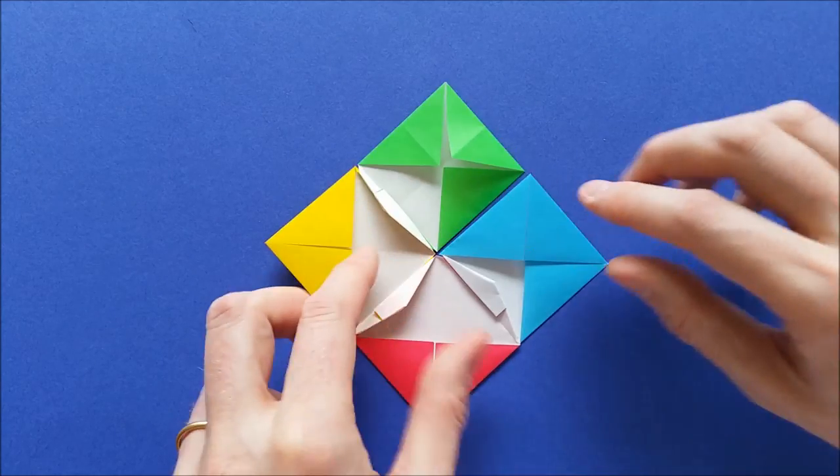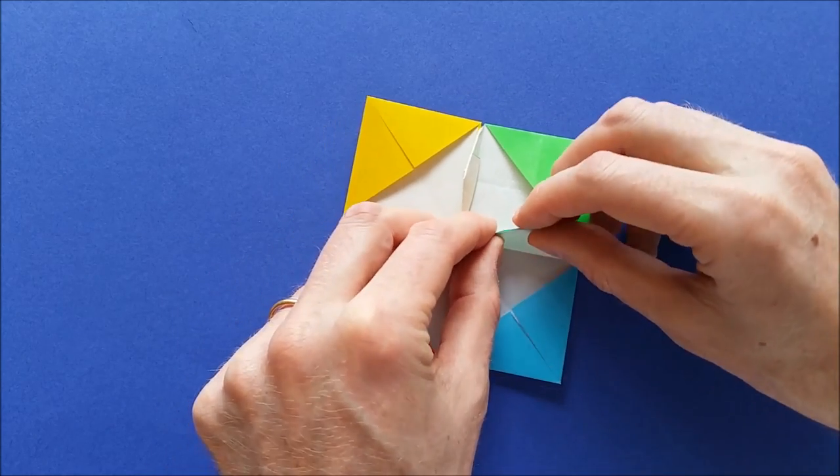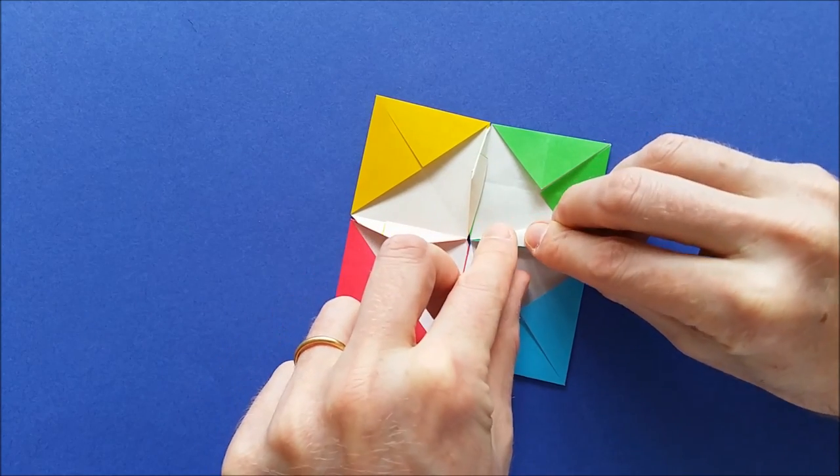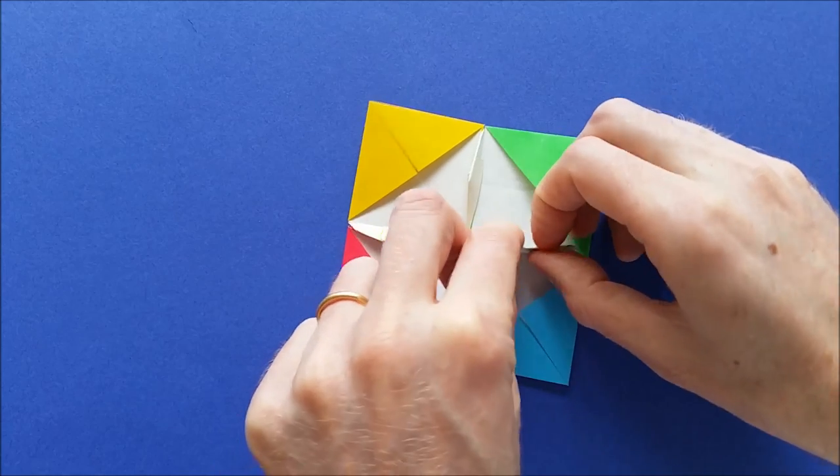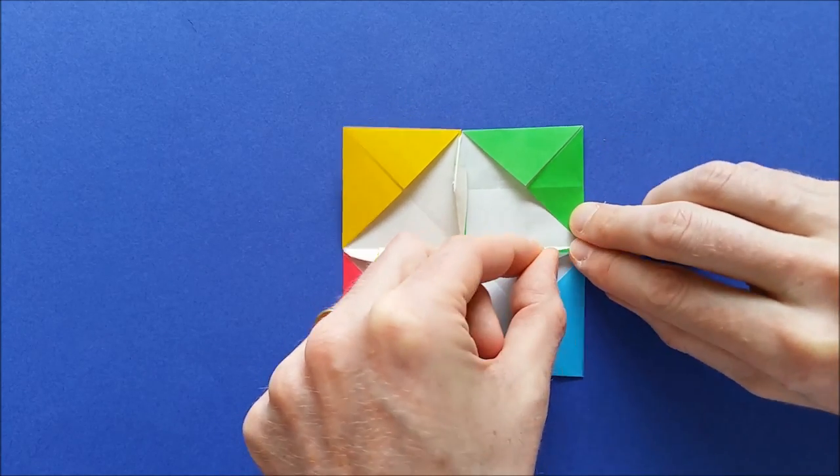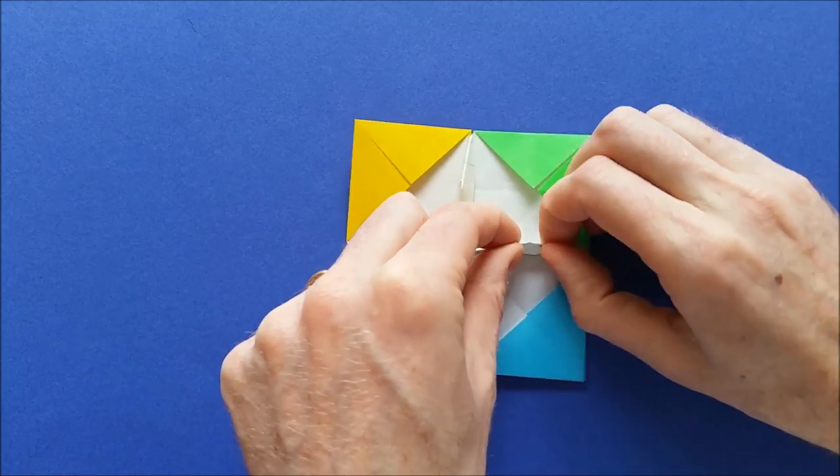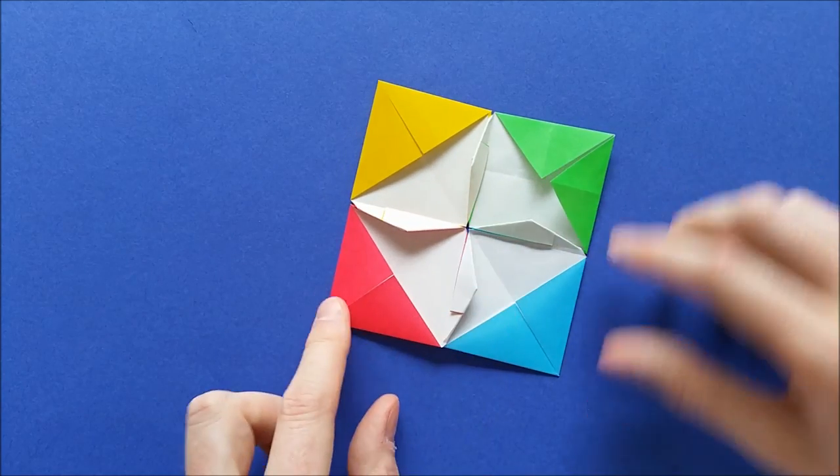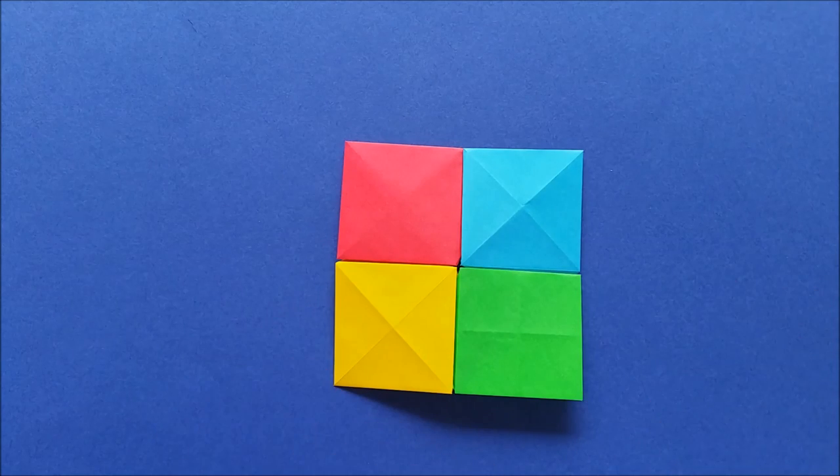Now I can make the last one. Lift the flaps. Flatten. Fold. Rotate. Fold again. And rotate again. And we are done. The four pixels are now joined.